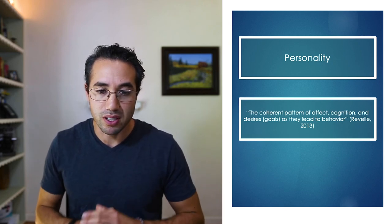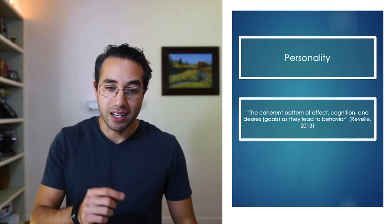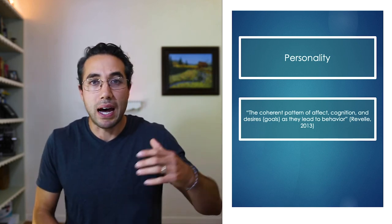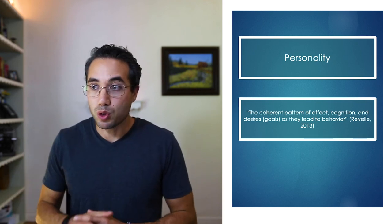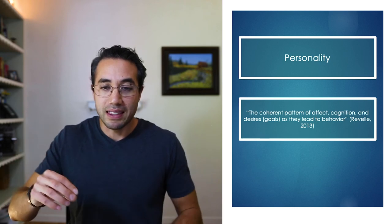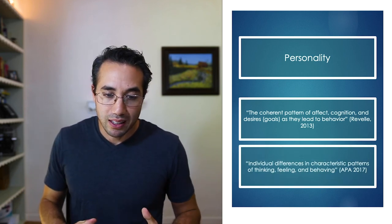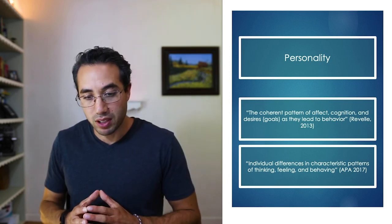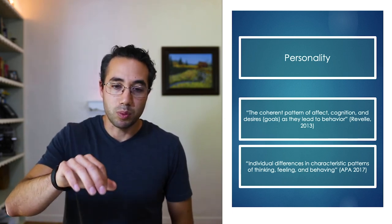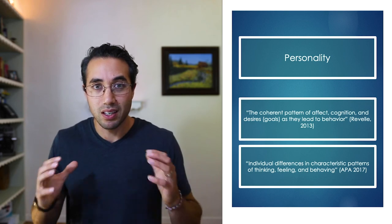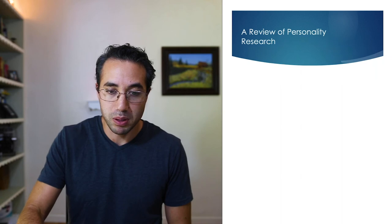Now, Personality 101 — a brief overview. Here are two definitions. The first: personality is the coherent pattern of affect, cognition, and desires as they lead to behavior. Affect is your outward-facing emotions — how you seem on the outside, your mood, the vibes you're sending. Cognition is your thought processes. And then those driving desires that motivate you — your motives. All three combine into your behavior — that's personality. Another definition from the APA: personality is individual differences in characteristic patterns of thinking, feeling, and behaving. Essentially, this is an all-encompassing description of who you are as far as how you interact with people in the world around you.